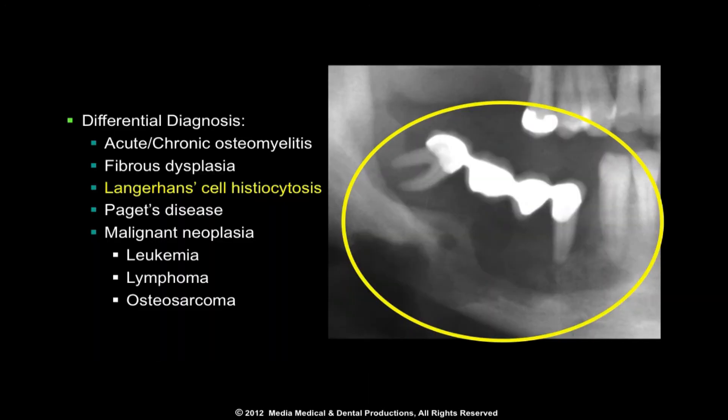The pattern and extent of bone destruction is also useful in distinguishing osteomyelitis from Langerhans cell histiocytosis. In addition, the borders of Langerhans lesions tend to be more punched out and defined than those of osteomyelitis. Periosteal new bone and sequestra are not seen in Paget's disease, a generalized condition usually found to involve the entire jaw.